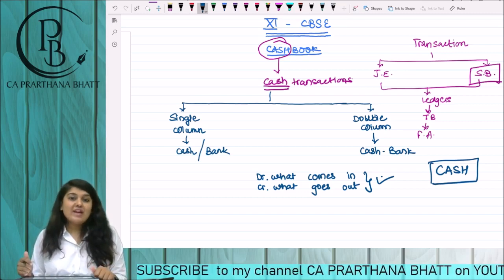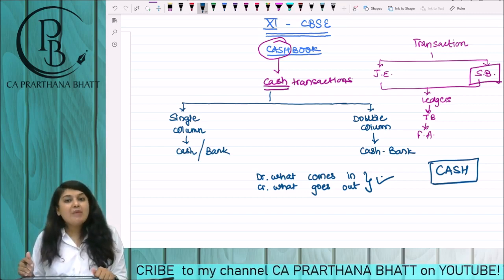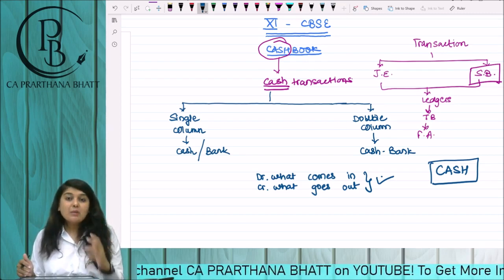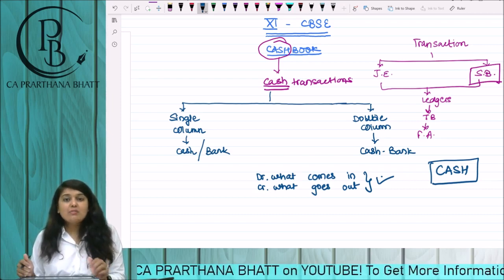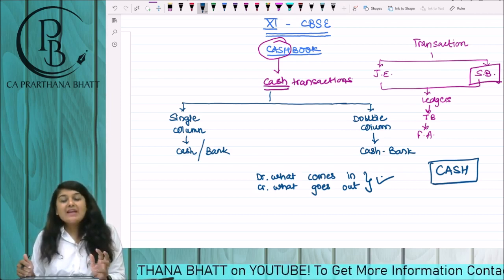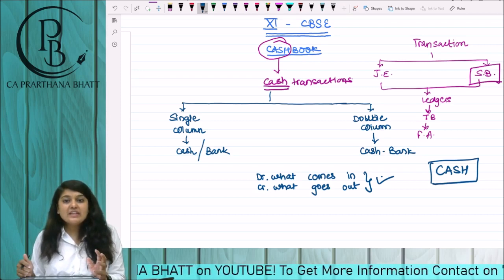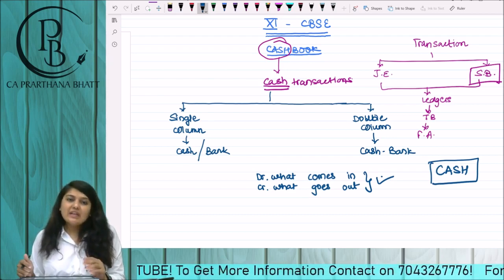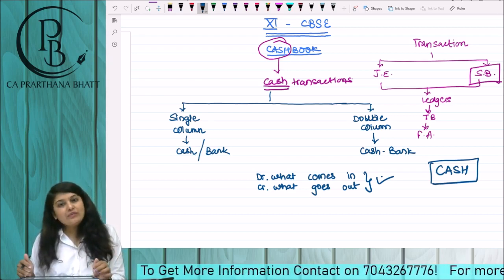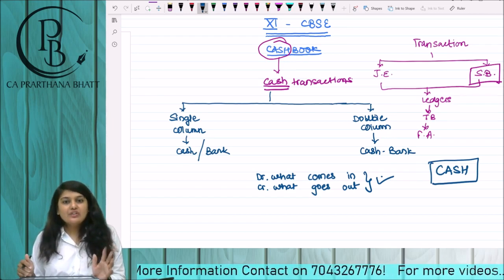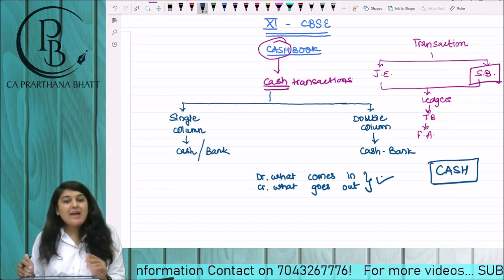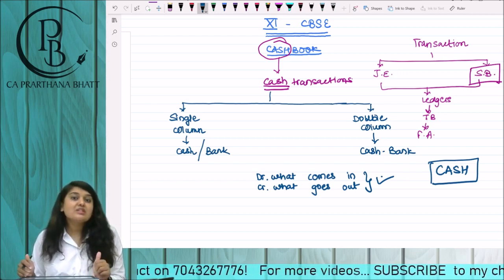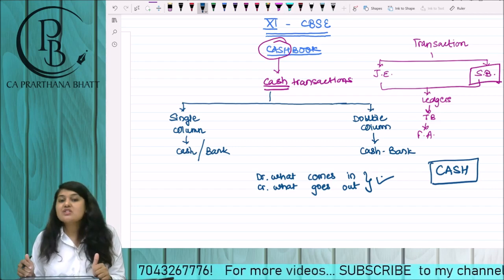I am specifically saying cash-column-wise, because in the case of bank, there can be a negative balance. How is that possible? Have you learned about bank overdraft? Sometimes banks may give you a facility — you don't have money as of now, no issues, you make your payment from your account. The bank will pay and later when you get the money, you pay that back with interest. That is bank overdraft — that can be said to be a negative balance of bank. But in case of cash, it is definitely not possible.